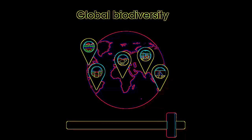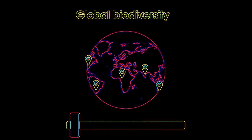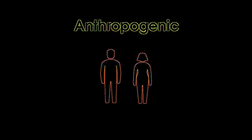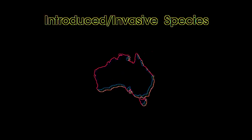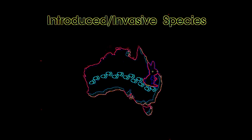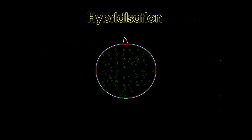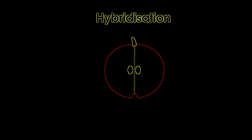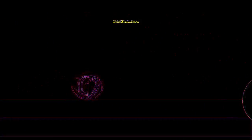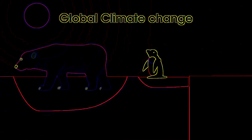There are many proposed reasons for the current drop in biodiversity. Some of those reasons are anthropogenic, meaning caused by humans. Anthropogenic factors include things like introduced or invasive species, such as the introduction of rabbits to Australia, human-induced hybridization, such as in plants to create optimal species of crop, and over-harvesting of resources.